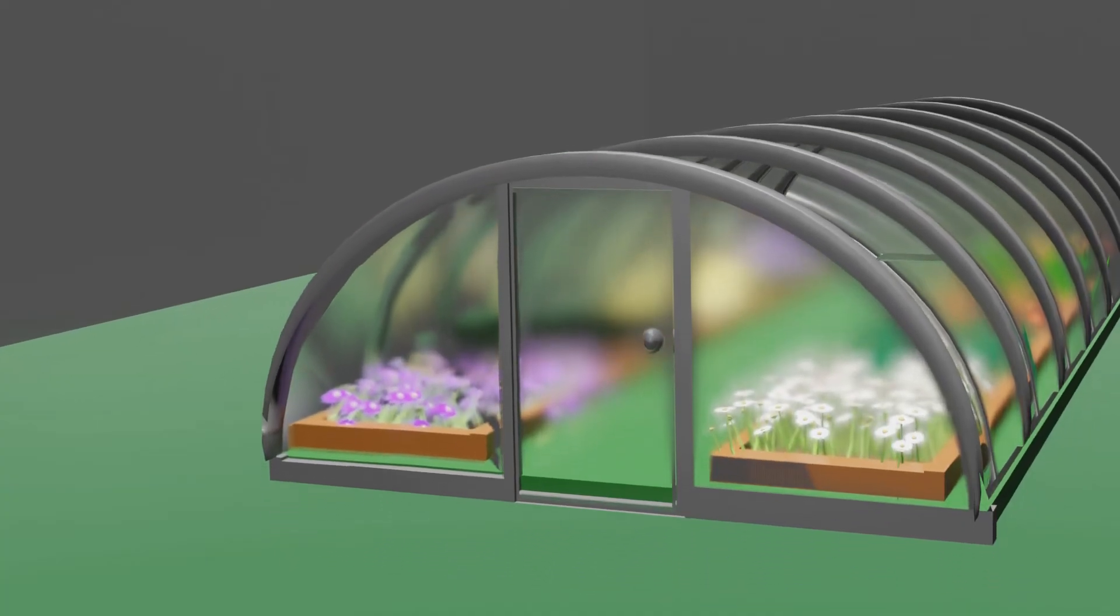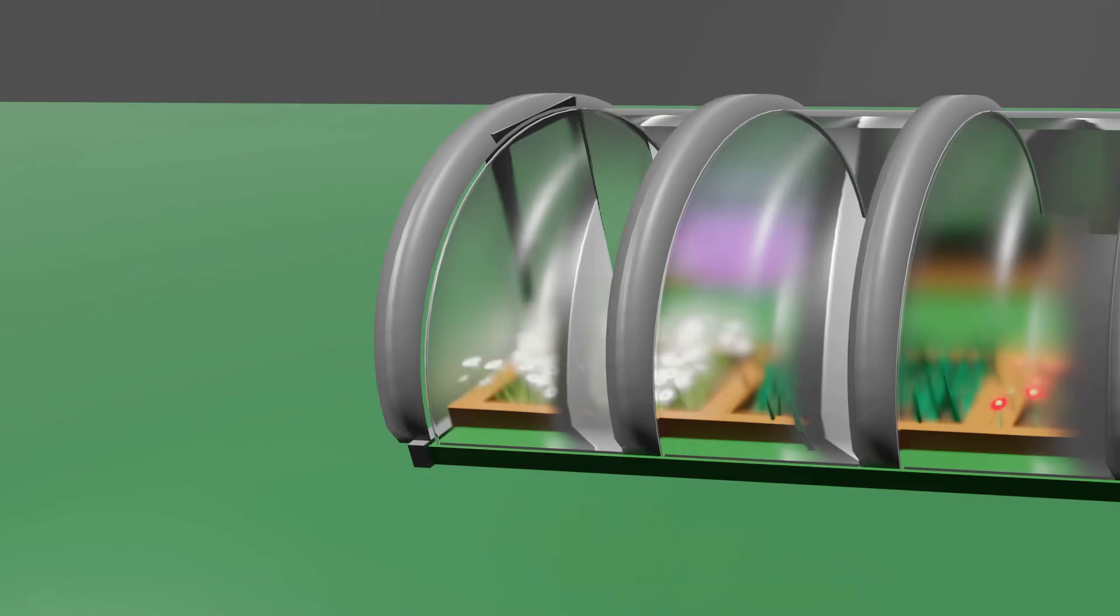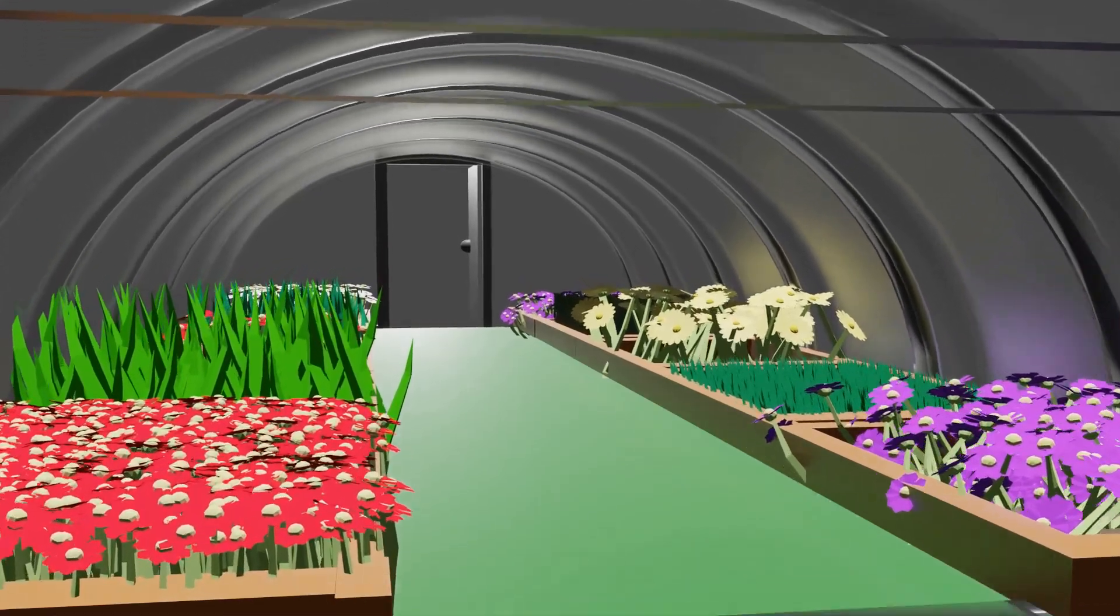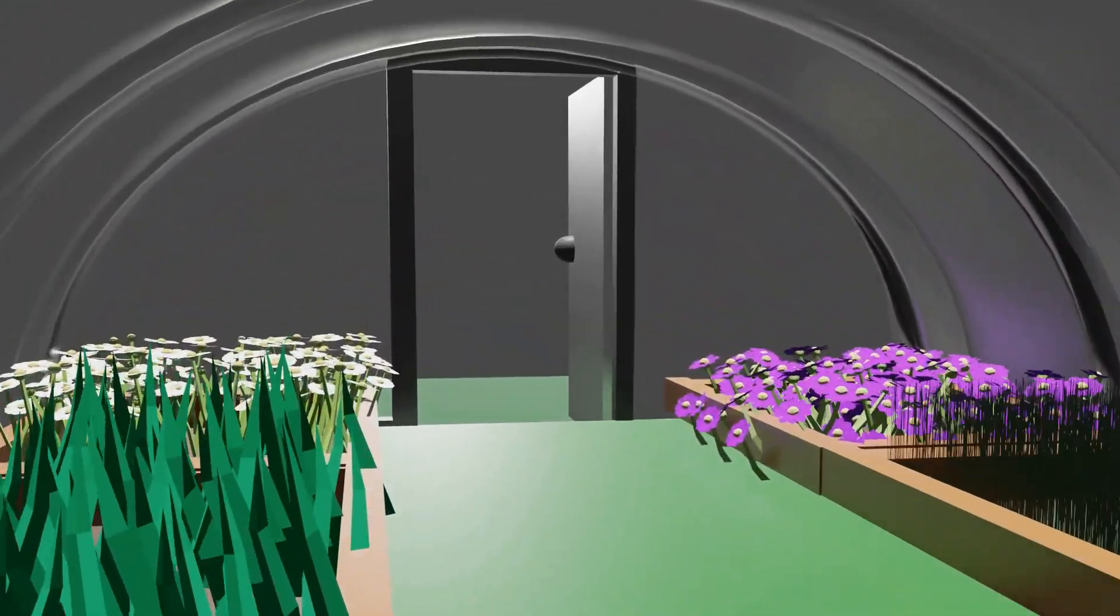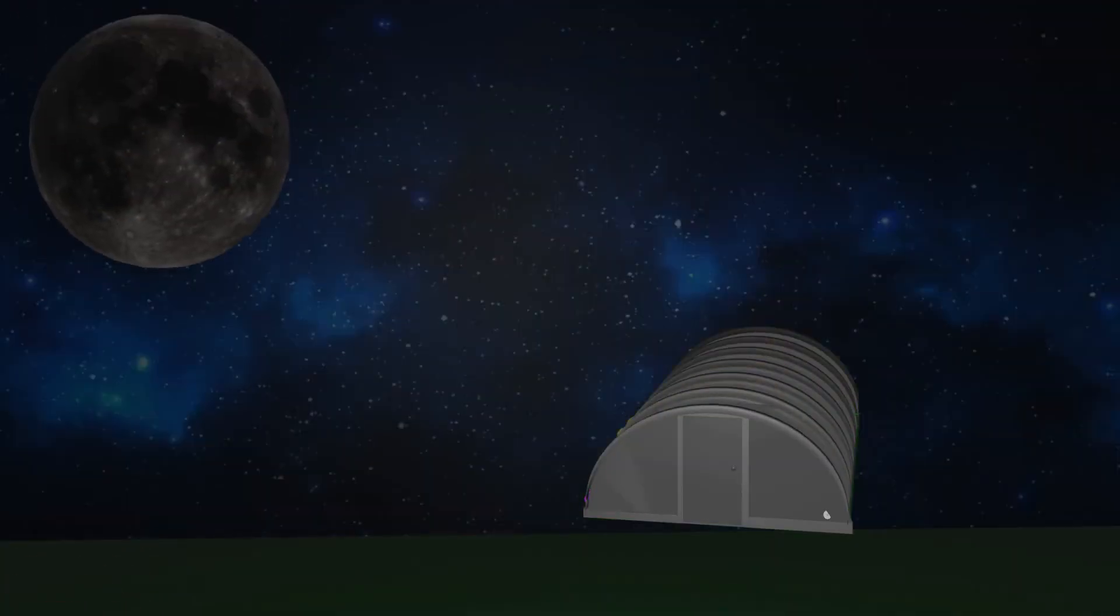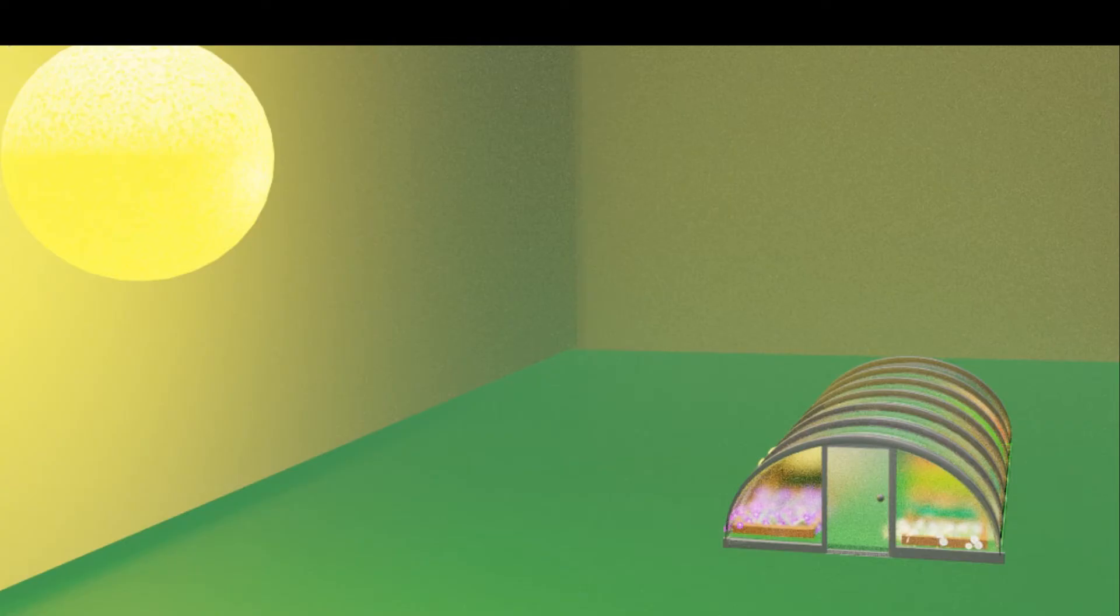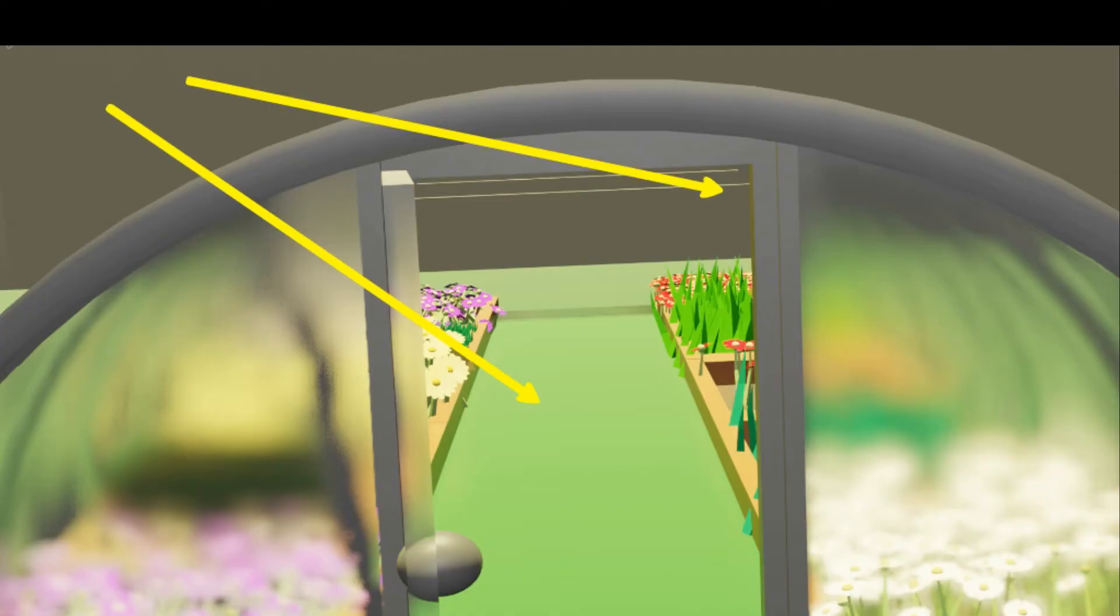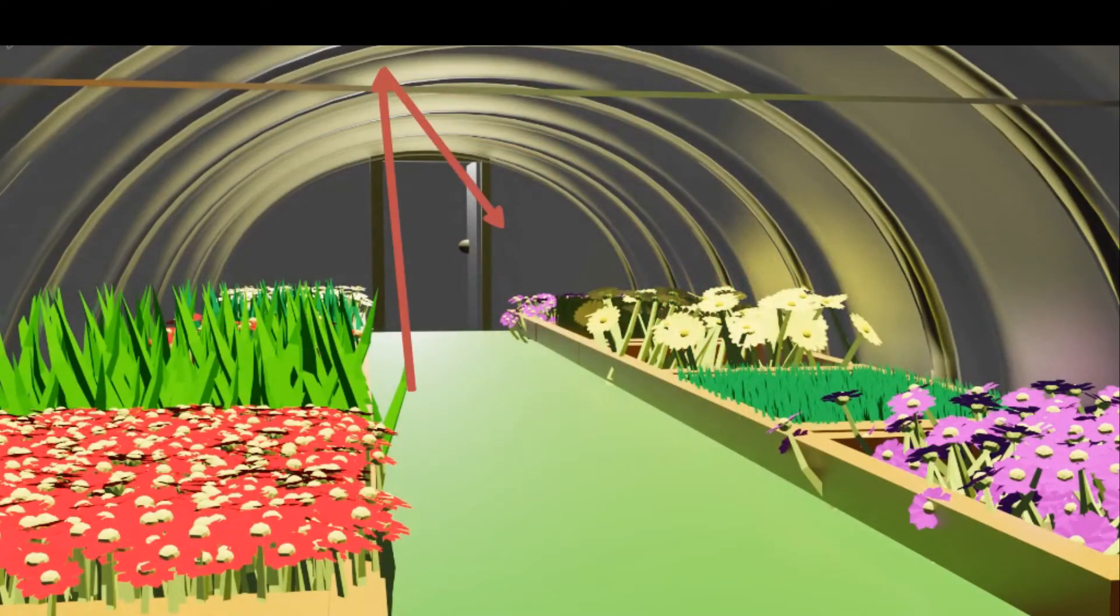A greenhouse is a big room made of glass panels or transparent plastic sheets. It provides a warm environment to the plants and vegetation grown inside it so that they can grow well in night and also in winter. Glass or transparent plastic sheets used in greenhouses allow the sun's heat to enter the greenhouse and trap the heat which is reflected back by the earth. The heat trapped by the walls and roof of the greenhouse keeps the inside environment warm.